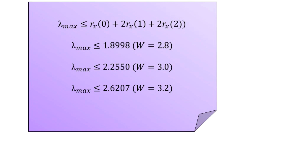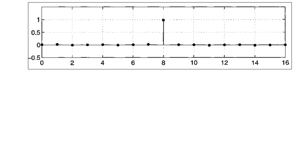The channel equalizer is first initialized using a training sequence of length 500. The convolution of the channel's unit sample response h(n) with the equalizer's unit sample response w(n) is visualized at the end of the training sequence. The horizontal axis shows values 0 through 16, and the vertical axis ranges from −0.5 to 1. The convolution result is approximately a unit sample at n = 8, with zeros elsewhere, indicating the equalizer is a good approximation to the inverse of h(n).